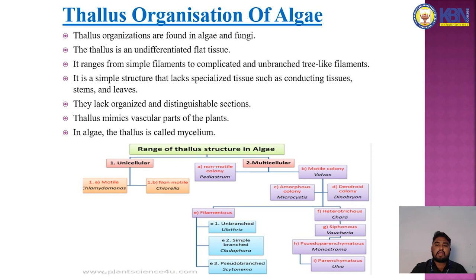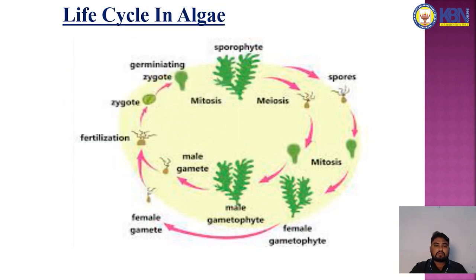The filamentous type is divided into three types: unbranched, simple branched, and pseudo-branched. That covers the thallus organization of algae. Next is the life cycle of algae — algae have a sporophyte generation, but they produce spores.